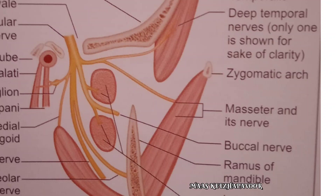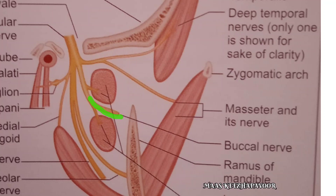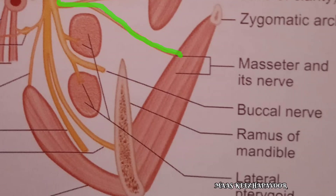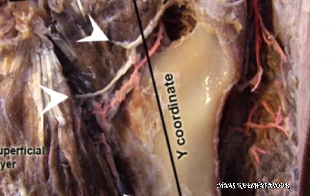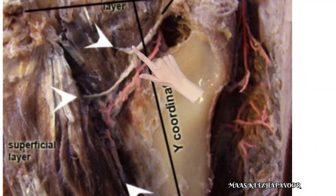The anterior division of the mandibular nerve supplies the remaining muscles of mastication — that is, masseter, temporalis, and lateral pterygoid muscles. It also gives a sensory branch named the buccal nerve. So the anterior division is chiefly motor and partially sensory. The massetric nerve emerges from the upper border of the lateral pterygoid muscle in front of the temporomandibular joint.